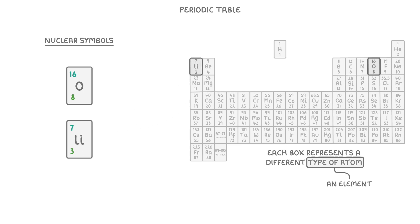The first thing to notice is the elemental symbol, which is the one or two letter symbol that represents that element. So O represents oxygen and Li represents lithium.